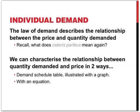The law of demand describes the relationship between the price and the quantity demanded. Typically, when the price decreases, the quantity demanded increases — ceteris paribus. You'll recall that ceteris paribus means everything else remaining constant. So, if everything else is unchanged and only the price of the product decreases, the quantity demanded will increase.